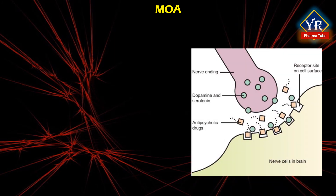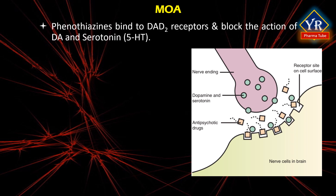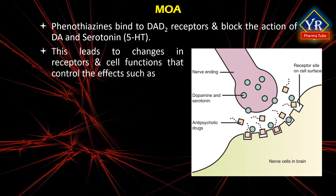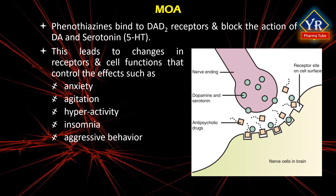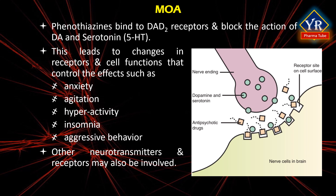Mechanism of action of phenothiazines. The term phenothiazine refers to the basic chemical structure of a large number of drugs similar in structure and pharmacological action. Although some of these drugs are more effective than others, all produce the same pharmacological effects. Phenothiazines and most antipsychotics bind to dopamine D2 receptors and block the action of dopamine and serotonin (5-hydroxytryptamine) on neuronal cell membranes, exerting their effects on cellular functions. This leads to changes in receptors and cell functions that account for therapeutic effects such as reduction of anxiety, agitation, hyperactivity, insomnia, and aggressive or combative behavior more quickly than hallucinations, delusions, and thought disorders. Other neurotransmitters and receptors may also be involved. Additionally, these agents have peripheral or central antagonistic activity against alpha-adrenergic, serotonergic, histaminic, and muscarinic receptors.